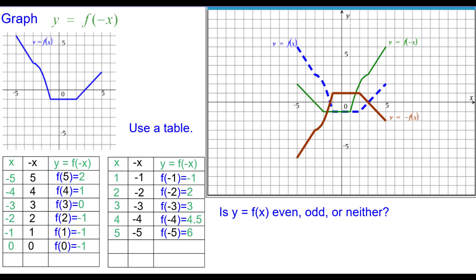And so the question is, is it even, odd, or neither? Well, we can definitely see that the blue and green are not equal, so it's not even. The brown and the green are not equal, so it's not odd. So the answer is, it's neither.